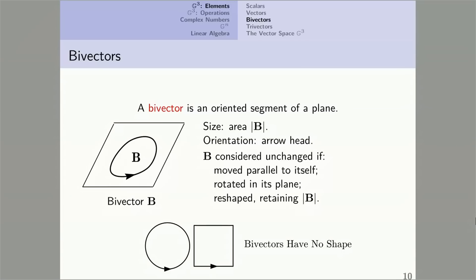To illustrate this last point, I started with a circle indicating a bivector. I've squared the circle, giving a square with the same area as the circle. I've given the two figures the same orientation. Those bivectors are considered equal. Bivectors have no shape.